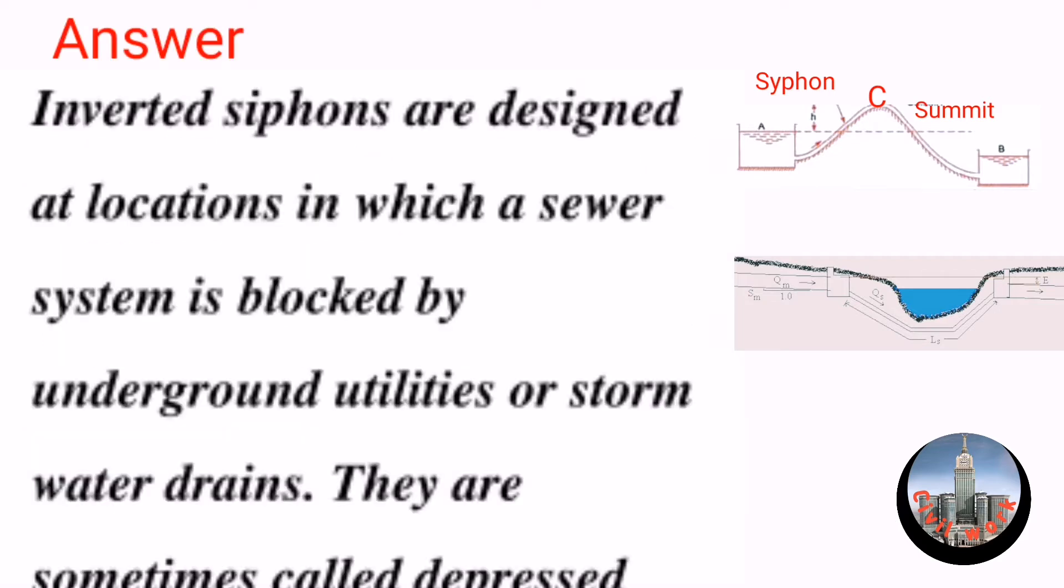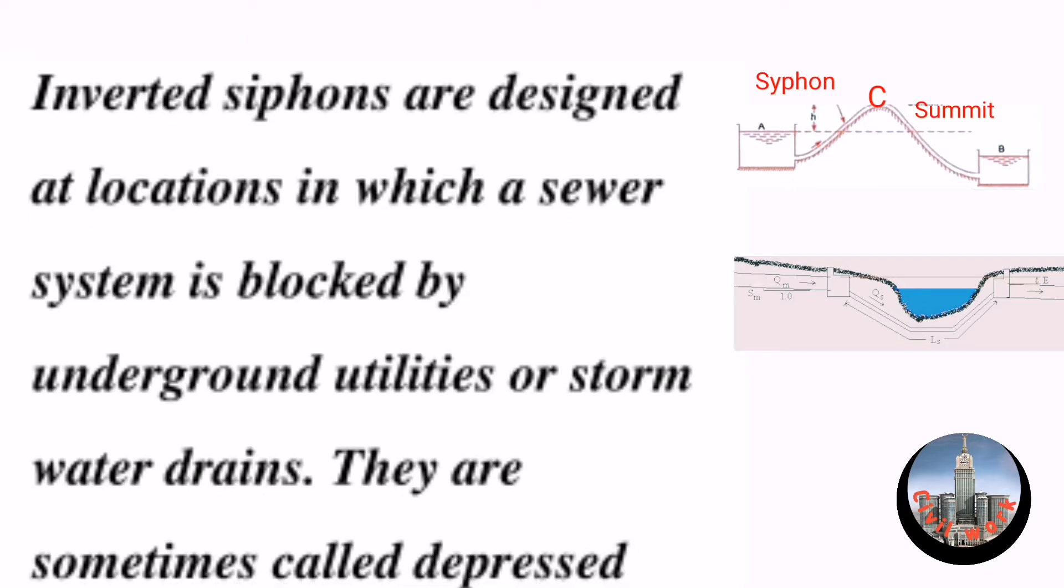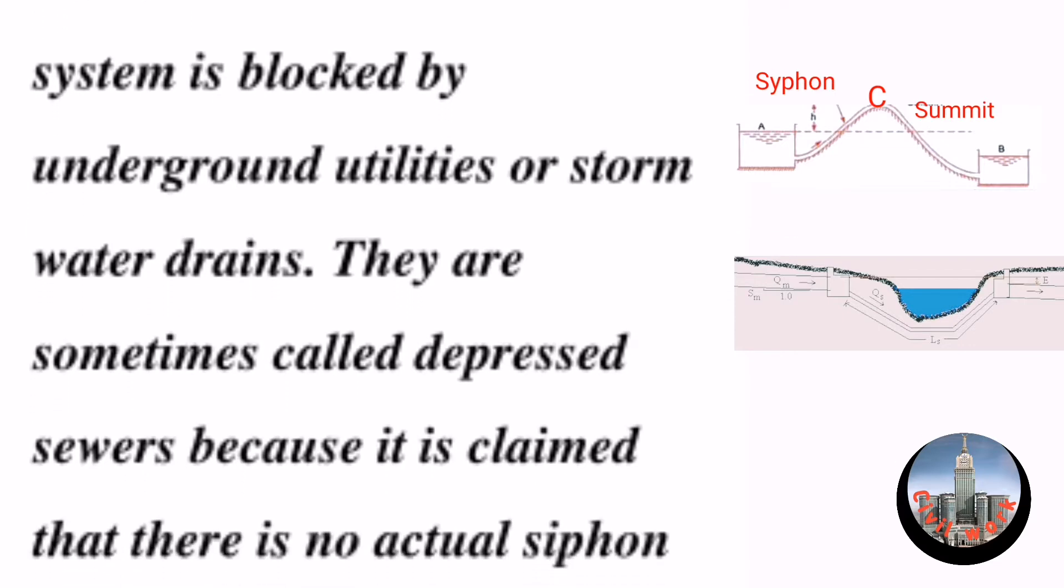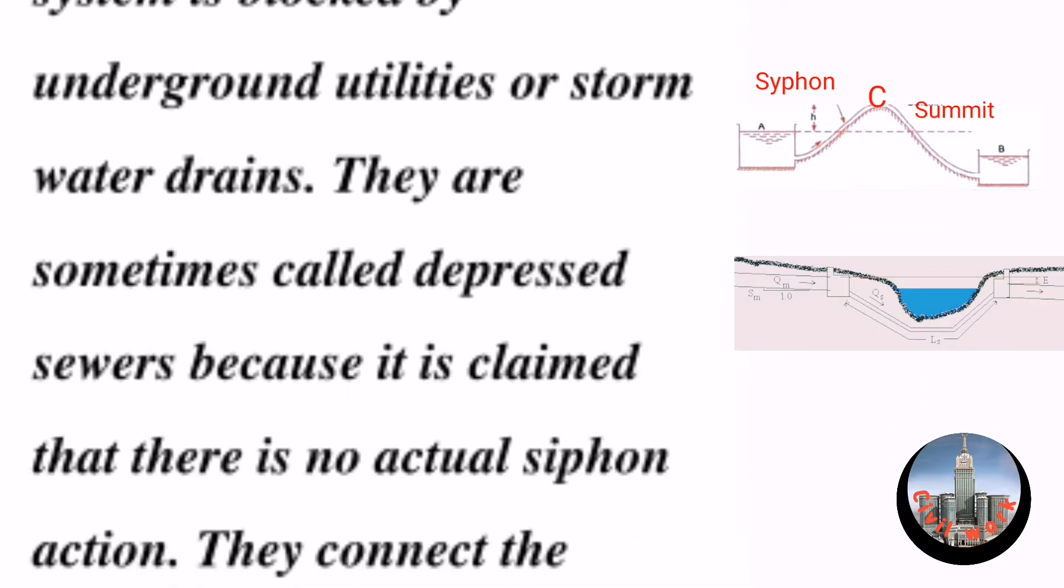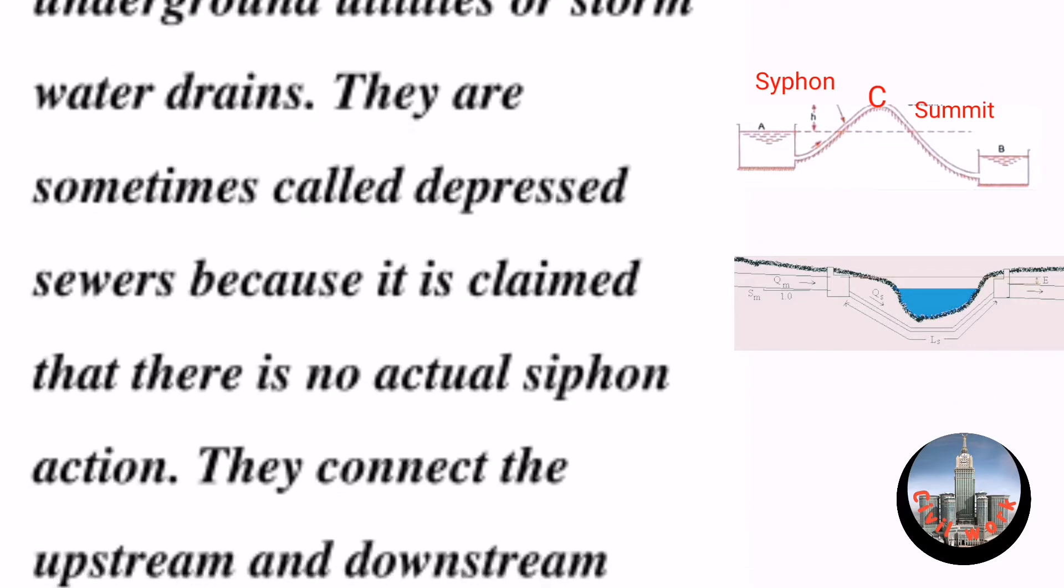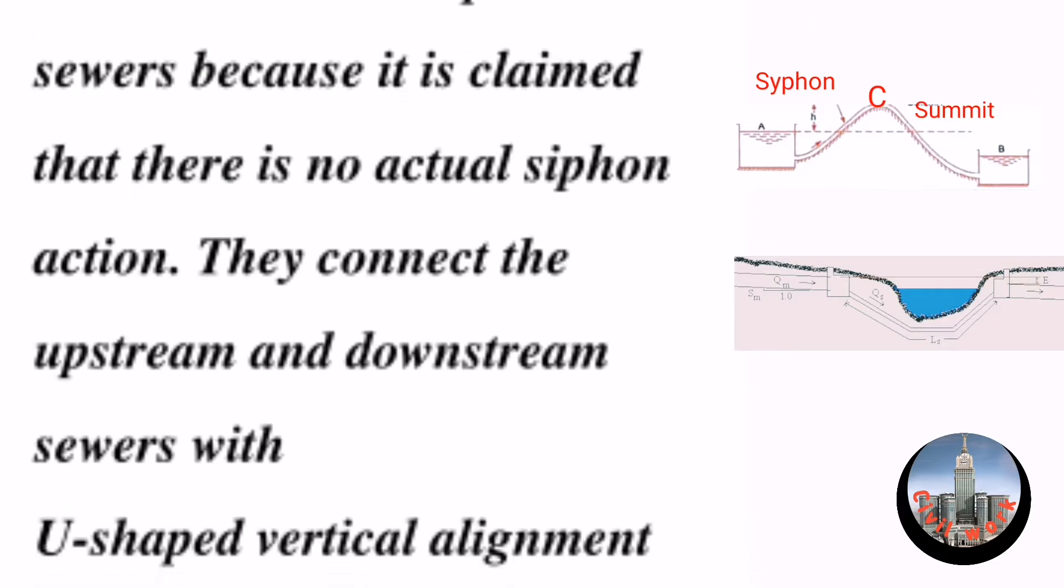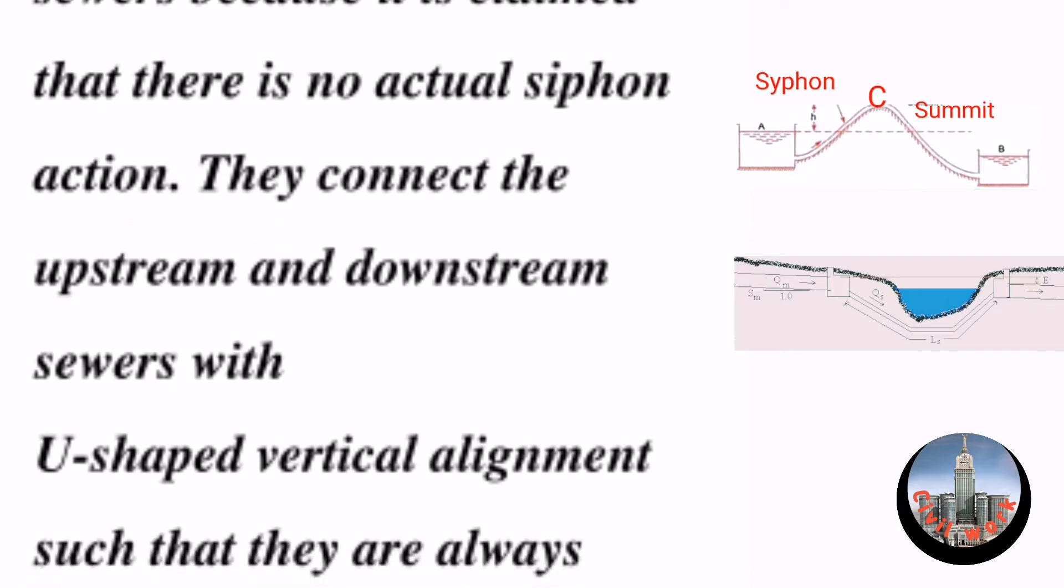Inverted siphons are designed at locations where a sewer system is blocked by underground utilities or storm water drains. They are sometimes called depressed sewers because it is claimed that there is no actual siphon action.